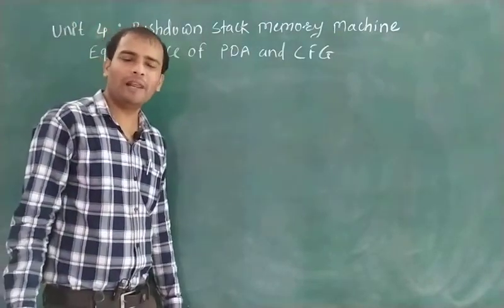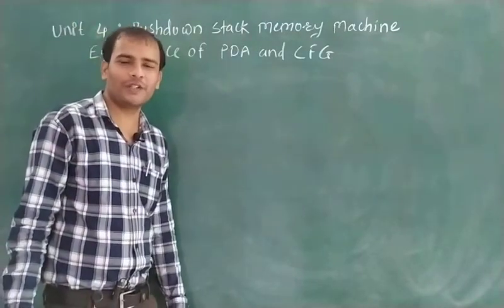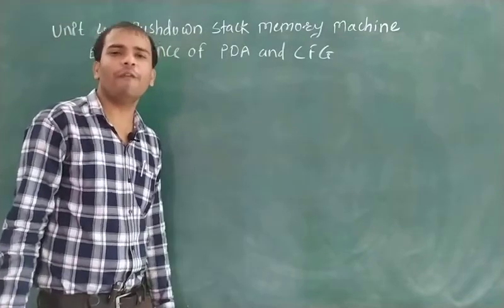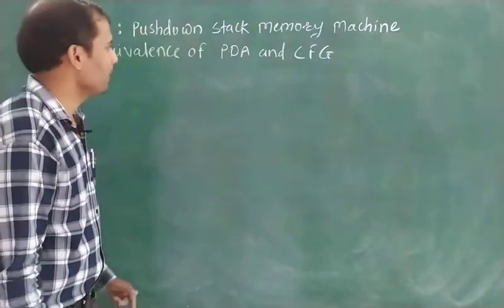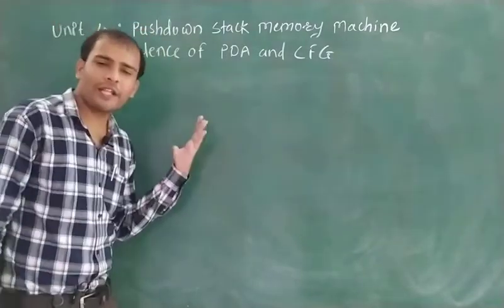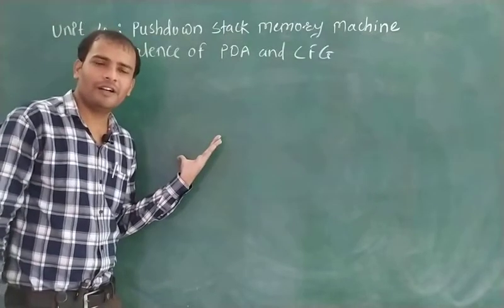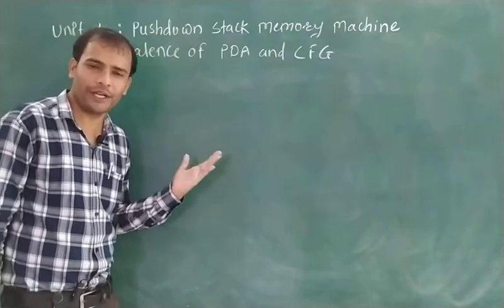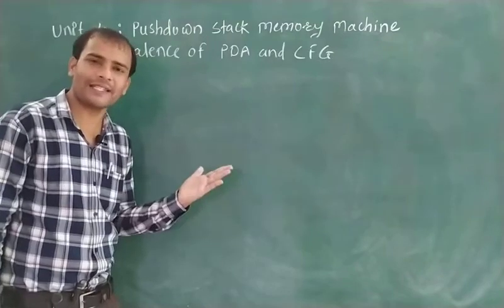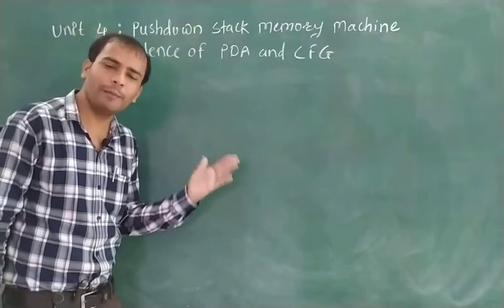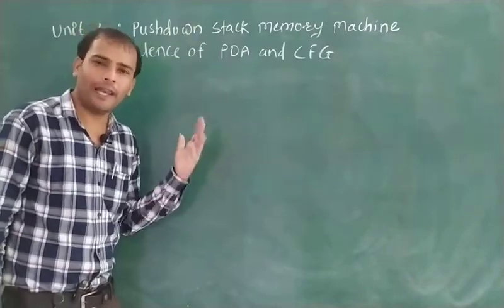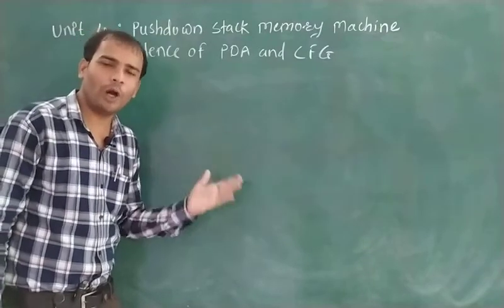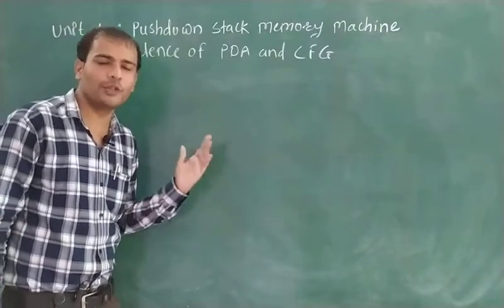Hello, I welcome all the students for the lecture series of subject Theory of Computation. In the last lecture we have seen that PDA is classified into two important types: DPDA, which stands for deterministic pushdown automata, and NPDA, which stands for non-deterministic pushdown automata.